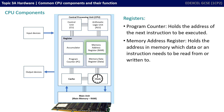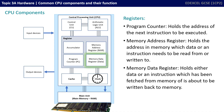One is called the memory address register. This register holds the address in memory which data or an instruction needs to be read from or written to. In a similar way, there's a register called the memory data register, and this holds either the data or an instruction which has been fetched from memory, or which the CPU is about to write back to memory.